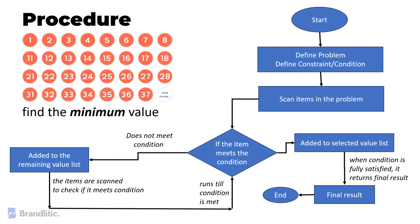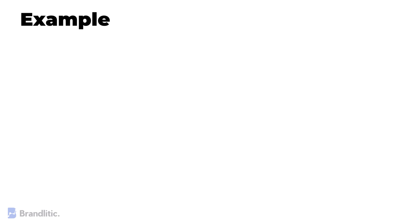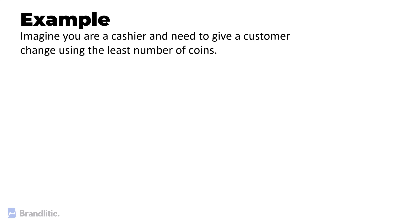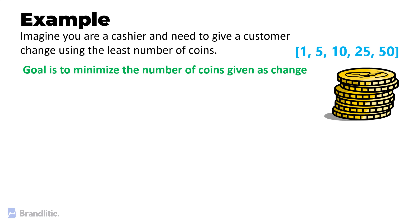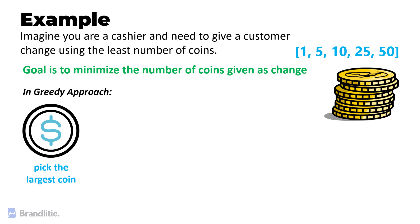Here's the flowchart representing this process. Now let's take up a greedy algorithm example of the famous coin change problem. Imagine you are a cashier and you need to give a customer change using the least number of coins. You have coins of different denominations — specifically 1, 5, 10, 25, and 50 — and your goal is to minimize the number of coins given as change. The greedy strategy here is to always pick the largest coin that is less than or equal to the remaining change.